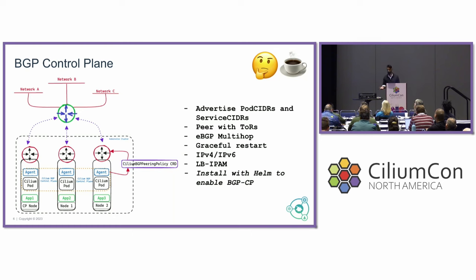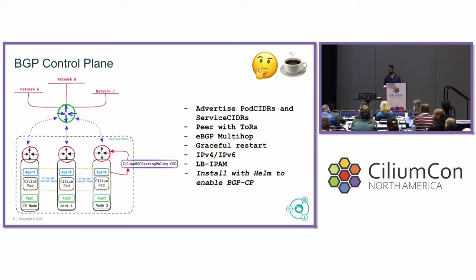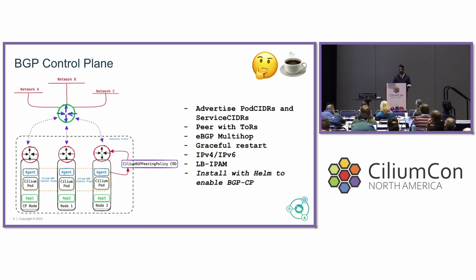Why would you want to do this? Imagine you operate a private production network without internet access. You have Kubernetes clusters, legacy databases, bare metal systems, and virtual machines. Your new services are running in Kubernetes, and legacy services need to tap into them. Static ways exist to do this, but they're not dynamic. This is where BGP comes in — you need something dynamic to facilitate connectivity.